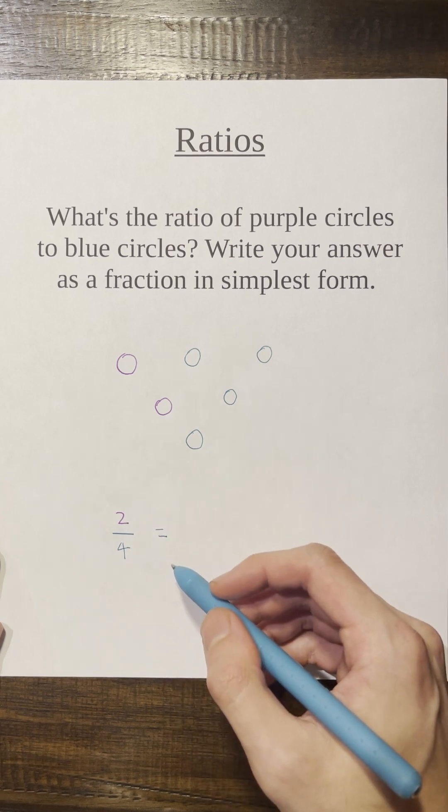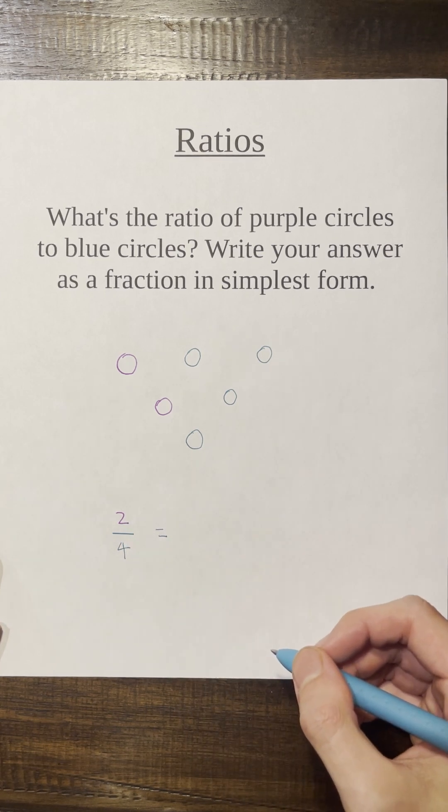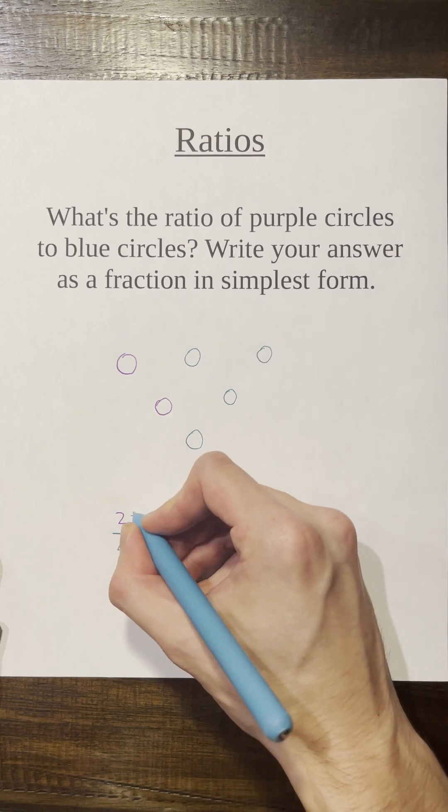Well, what's the greatest common divisor of two and four? It's going to be two.